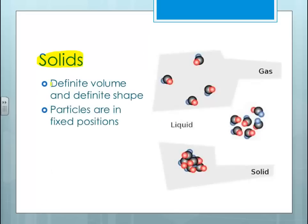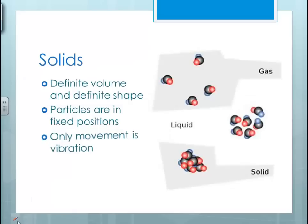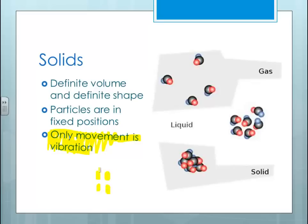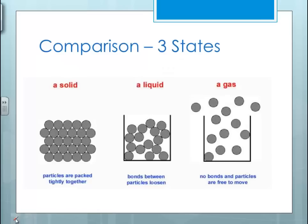Solids, as we've already mentioned, have definite volume and definite shape, and the particles are in fixed positions — meaning the particles themselves cannot slide past one another. That's why we do not classify solids as a fluid. The only movement in a solid is vibration; you have these particles in a fixed position that do have a slight vibration from side to side.